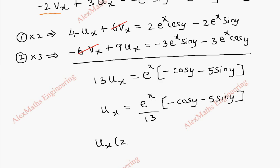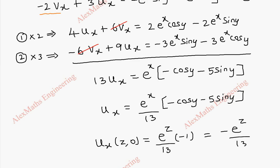Now, ux of z comma 0 will be — every x is replaced with z and y is 0 — so e power z over 13, cos 0 is 1 and there is a minus sign so it is minus 1, and sin 0 is 0. So this gives minus e power z over 13.